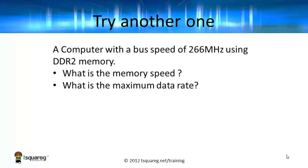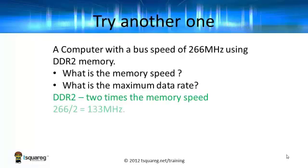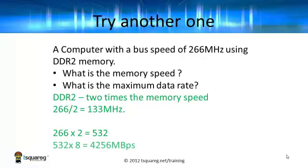One more example. A computer with a bus speed of 266 MHz is using DDR2 memory. What's the memory speed? It's DDR2, so we divide the bus speed of 266 MHz by 2 to get 133 MHz. For the maximum data rate, use the rule: multiply by 2, then by 8 — and there it is: 4,256 MB per second.